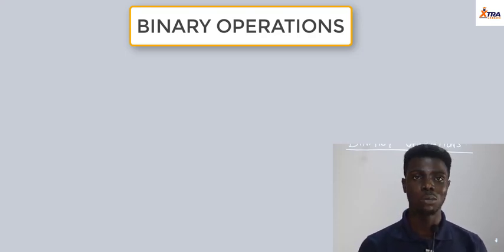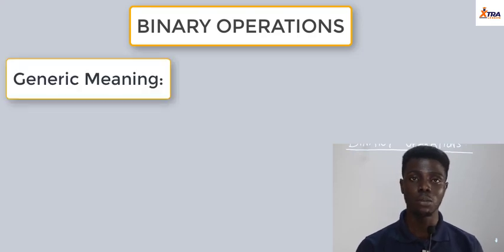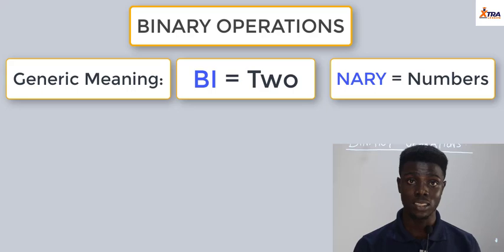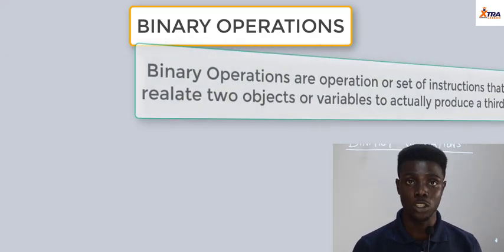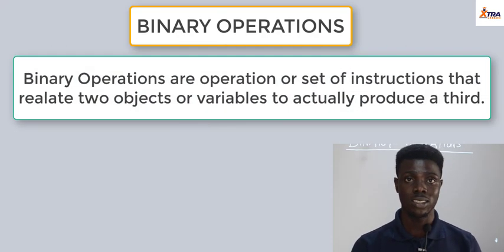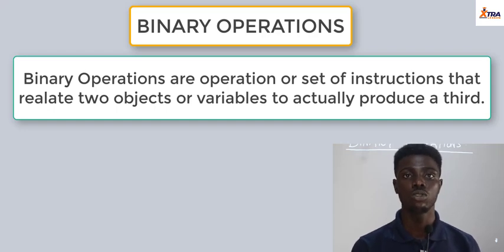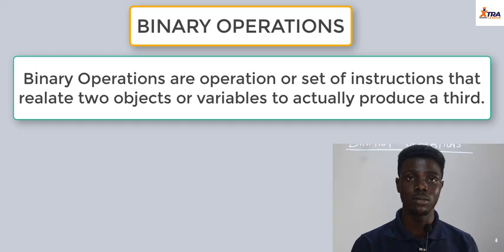Starting from its generic meaning: 'bi' meaning two, and then 'binary' relating to numbers, and 'operations' meaning operations relating each of these numbers together. Binary operations are operations or a set of instructions that relates two objects or two variables to actually produce a third.